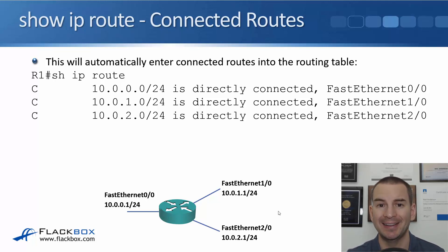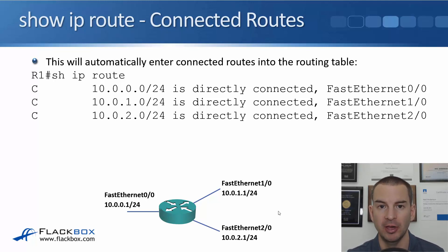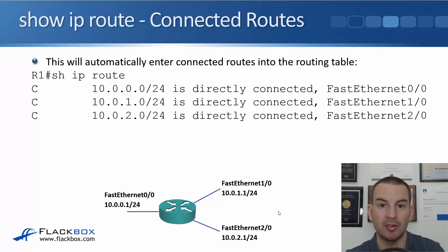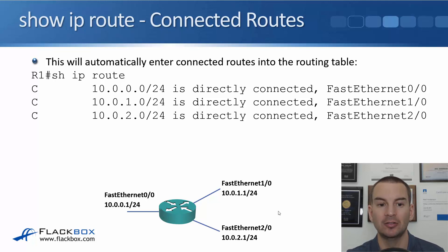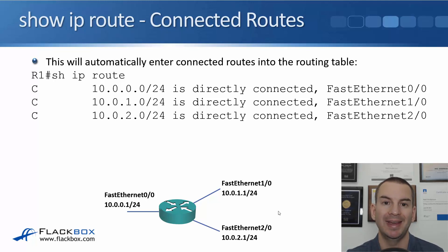The router adds connected routes into the routing table. Because you configured those IP addresses on those interfaces, the router knows it is connected to the 10.0.0.0/24 network on FastEthernet 0/0, the 10.0.1.0/24 network on FastEthernet 1/0, and the 10.0.2.0/24 network on FastEthernet 2/0. Those routes will be added to the routing table as connected routes.